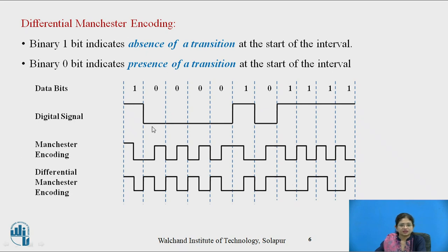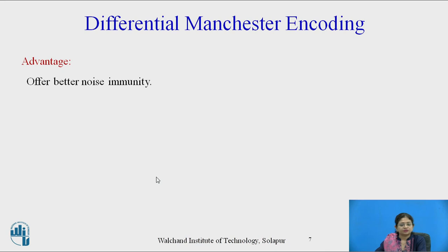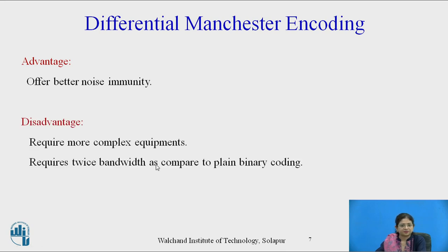The given data is thus converted in the form of differential Manchester encoding, and the physical layer transmits data in terms of various encoding techniques. The advantage is that differential Manchester encoding offers better noise immunity. The disadvantages are that it requires more complex equipment and requires twice the bandwidth compared to plain binary encoding.